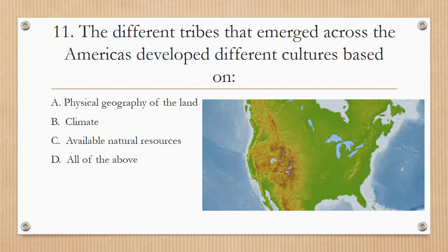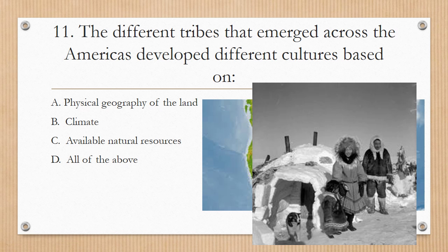Number eleven: the different tribes that emerged across the Americas developed different cultures based on which factor? D — all of them. The physical geography of the land, the climate, and the available natural resources would all be reasons why different tribes had different cultures. The reason the Inuit live in igloos is because there is a lot of snow and ice in that region, and they needed to use what they had to create a home.